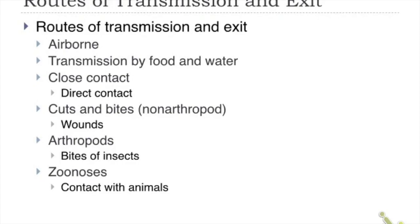We will now discuss the routes of transmission and exit of microorganisms — how organisms are transmitted from one person to another or within a community. First, let's talk about airborne transmission. Airborne refers to a route where microorganisms exist in air and humans in that environment can get infected. Airborne covers a much wider area compared to droplets, which are limited to a five-foot radius.